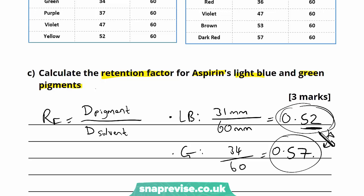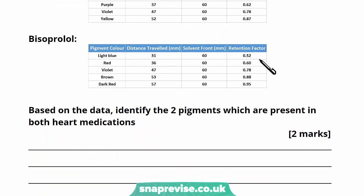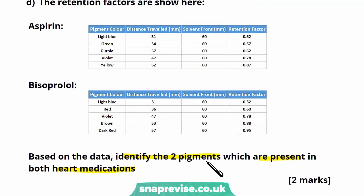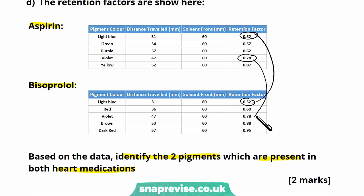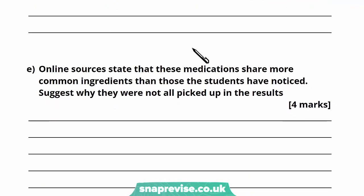Part D says the retention factors are shown here — we now have all the tables with calculated retention factors. Based on the data, identify the two pigments which are present in both heart medications. We need to look at each medication's table and find the two pigments with the same retention factor in each. The identical ones are 0.52, appearing in both tables, and also 0.78 appearing twice. So the two pigments present in both are the light blue pigment and the violet pigment.